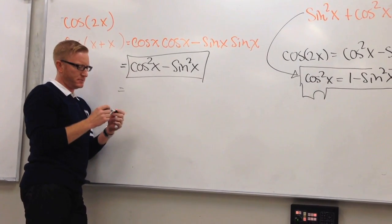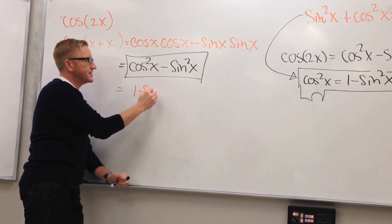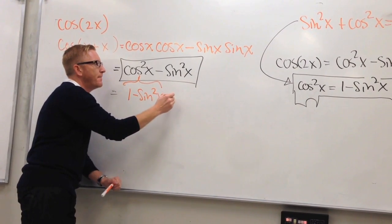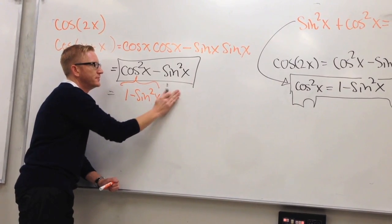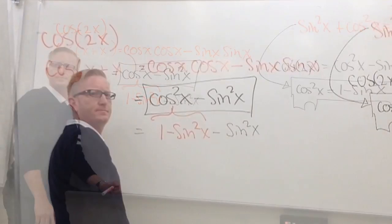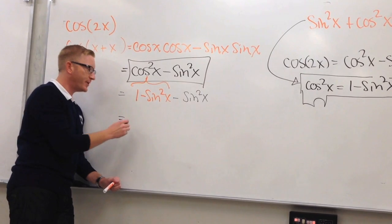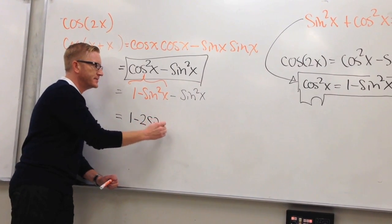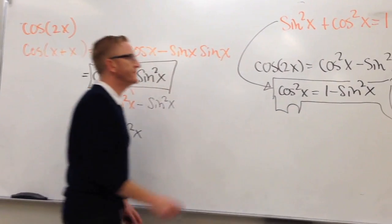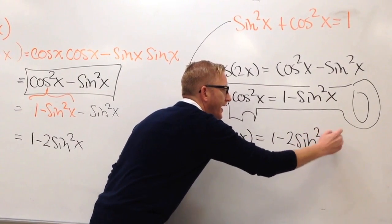I'm going to substitute 1 minus sine squared x in for cosine squared x. That gives us 1 minus sine squared x, and then we're still subtracting the sine squared x. Combining the sine squared terms, we get 1 minus 2 times the sine squared x. So the cosine of 2x equals 1 minus 2 times sine squared x.